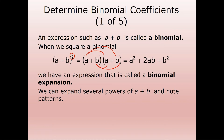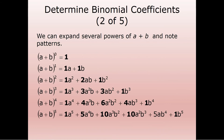We can do this to any power and we'll start to note a certain pattern. If we do the expansion to the zero power, anything to the zero power is just one. Anything to the first power is just itself. When we square something and fold it out, we wind up with A squared plus two AB plus B squared. Looking at the coefficients, notice that the first coefficient is always one and the last is always one.